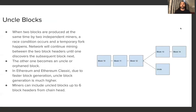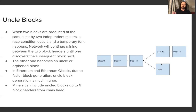Let's touch on uncle blocks before we get into reorgs. Uncle blocks happen when two blocks are produced at the same time by two independent miners. If you look at block 10, then block 11 and 12, and then two miners simultaneously discover block 13, this temporarily splits the network into two chains. Once the next block is produced on one chain — say block 14 on the top chain — the block on the lower chain becomes an uncle.